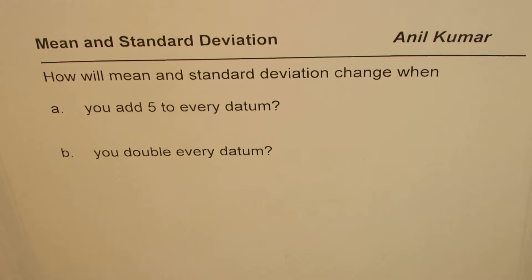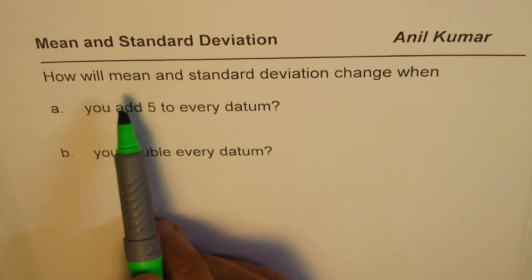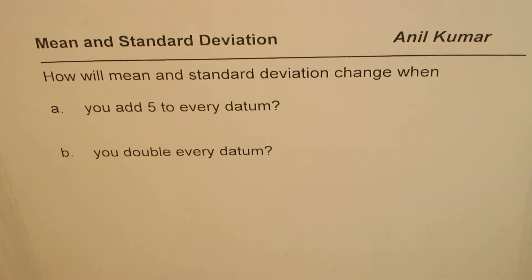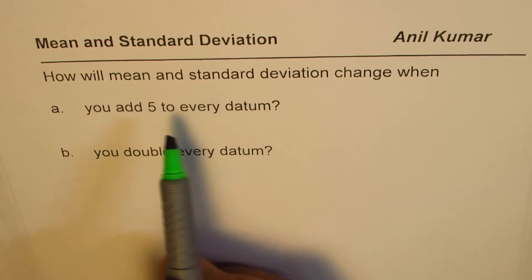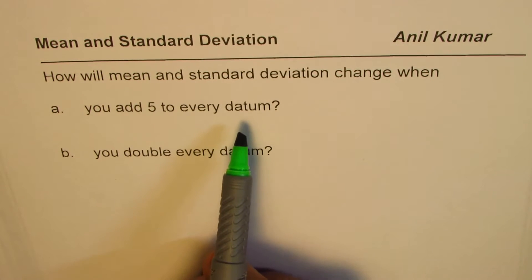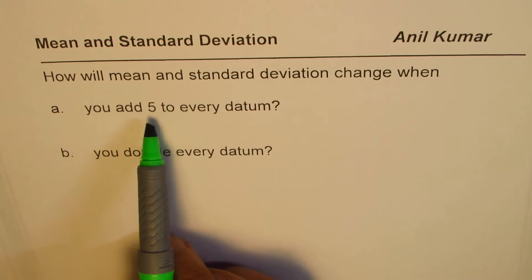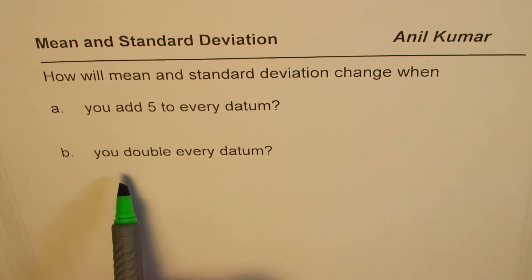You can pause the video, answer the question, and then look into my suggestions. The question is to find the change in mean and standard deviation if we change every data point. If you add 5 to each datum, what happens to these two? And if we double every datum, what happens to mean and standard deviation? You can pause the video and answer the question.